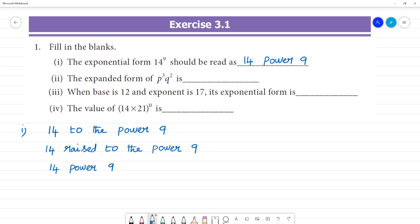Next is second one. Second one, the expanded form of p³q². P multiplied by P multiplied by P, then multiplied by Q multiplied by Q. So this is the meaning.